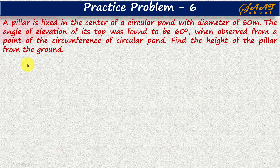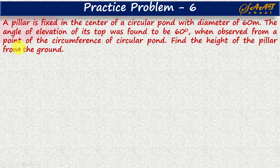Here is practice question 6. A pillar is fixed in the center of a circular pond with a diameter of 60 meters. The angle of elevation of its top was found to be 60 degrees when observed from a point on the circumference of the circular pond. We have to find the height of the pillar from the ground.